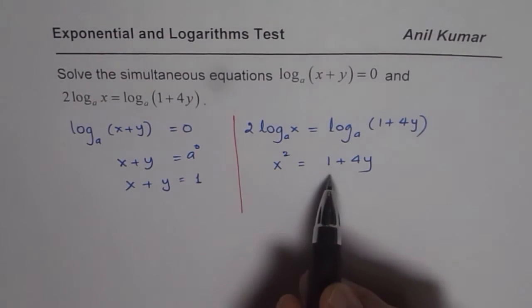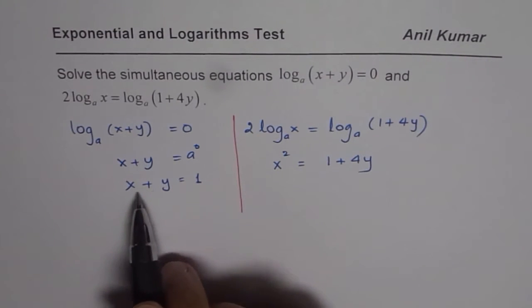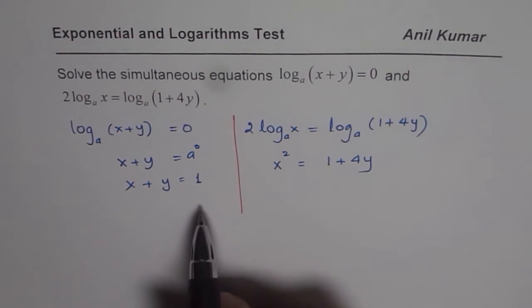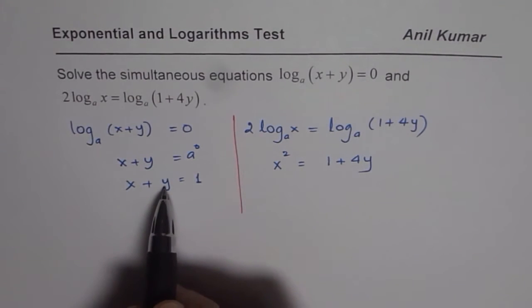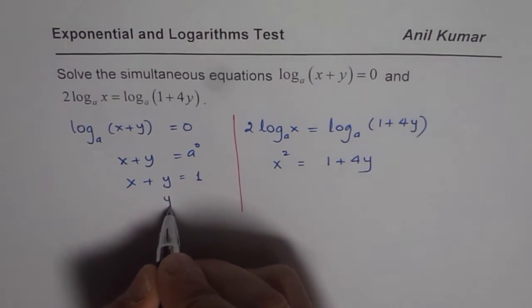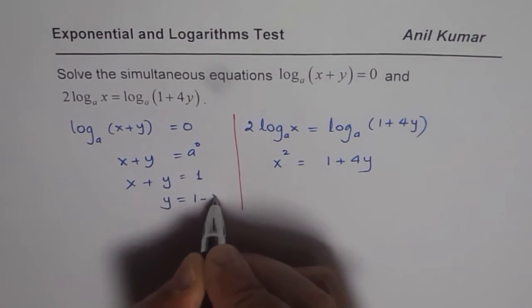Now we have two different equations in variables x and y. Using these equations we can always solve for x and y. So I think it would be a good practice to write y in terms of x here. We will substitute that in the second equation. So we have y equals 1 minus x.